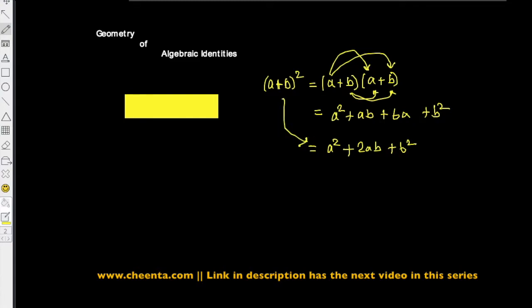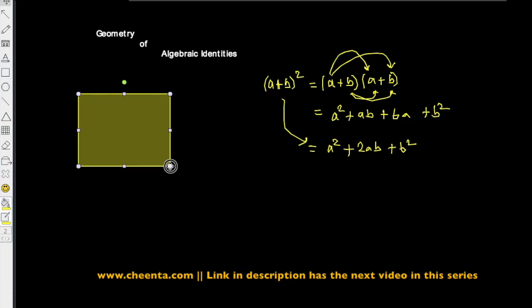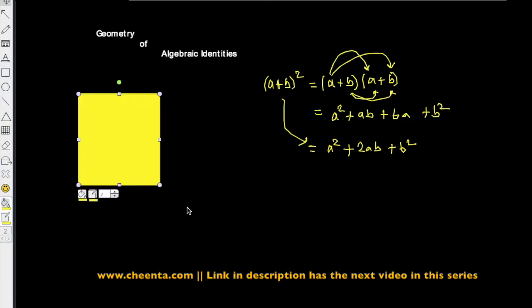Now this is a very standard way of looking at this identity, but we can interpret this using area of a rectangle or a square. Let's take a piece of square whose side lengths are a units. So suppose if a is equal to 5, this is just an example.